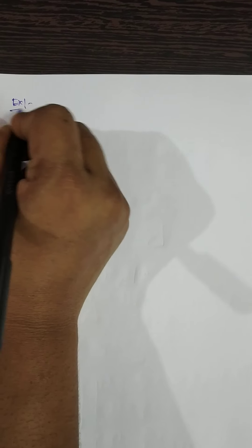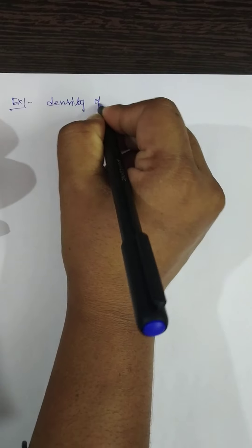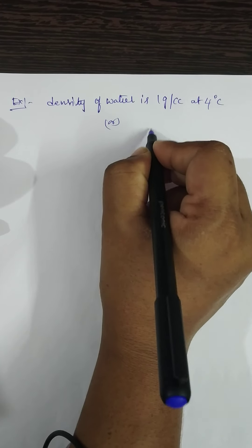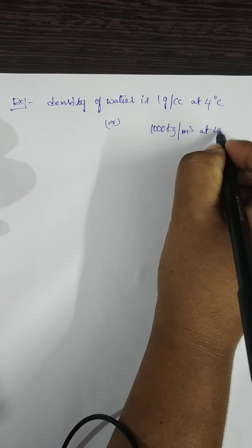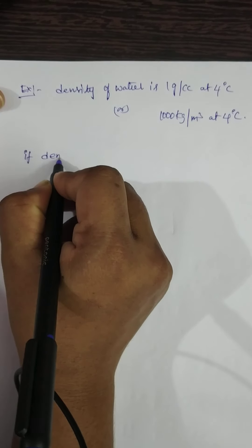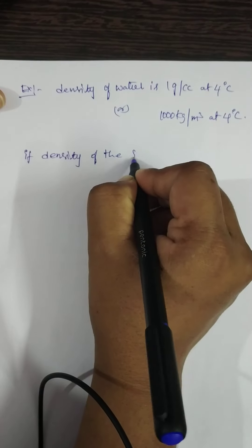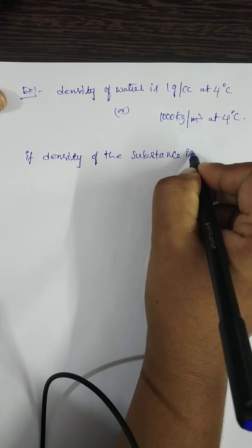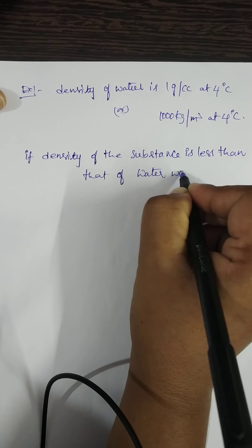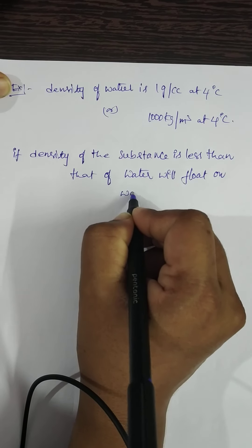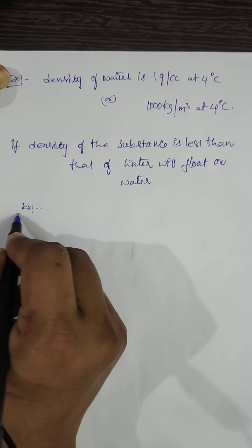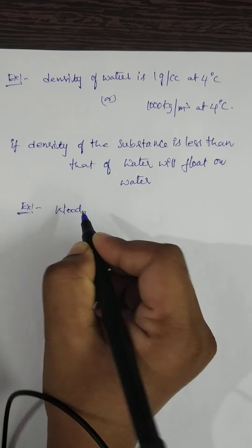For example, the density of water is one gram per cc at four degrees Celsius, or equivalently one thousand kg per meter cube at four degrees Celsius. If the density of a substance is less than that of water, it will float on water. Examples include water and petrol.